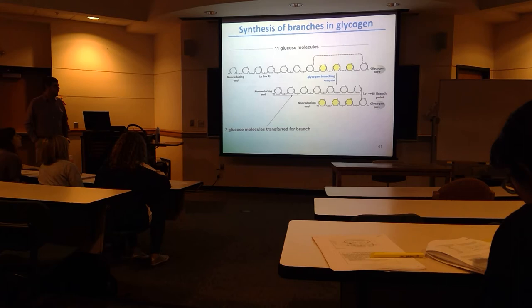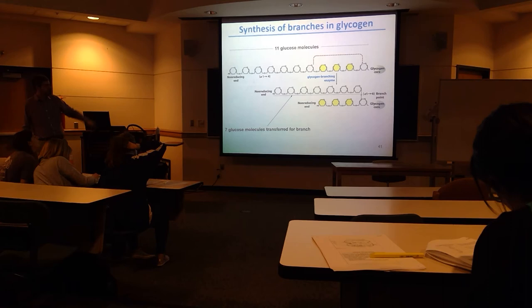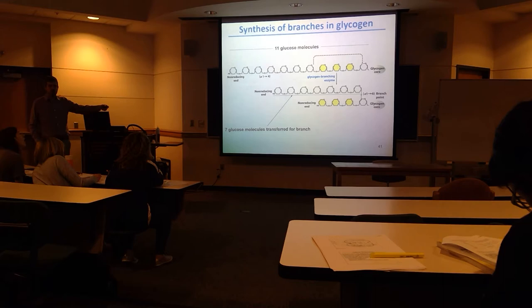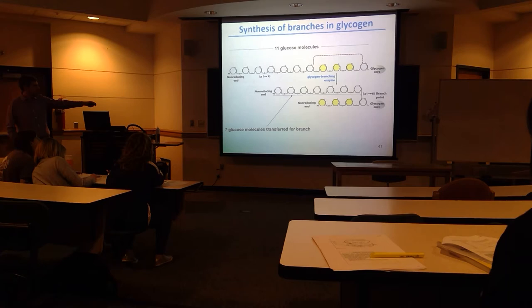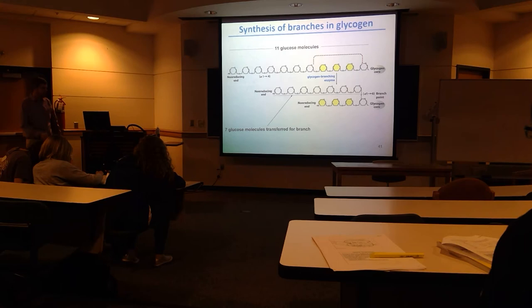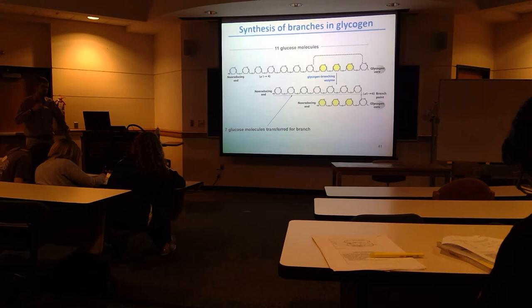There's a glycogen branching enzyme that takes the linear alpha-1,4 chain — after about 11 or so glucose molecules are added — and transfers seven of those glucose residues to make an alpha-1,6 linkage branch. That creates two non-reducing ends, which then get extended further, making more and more branches.